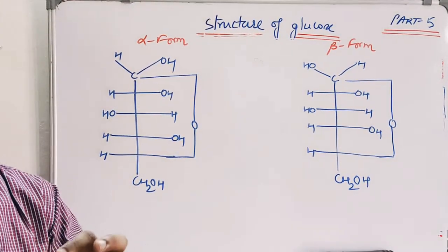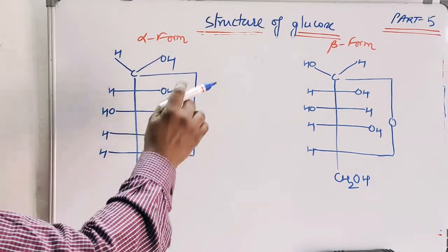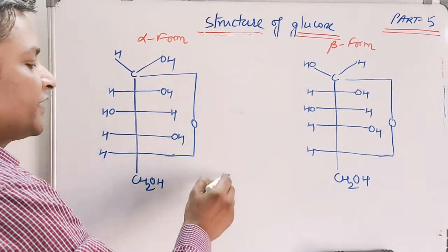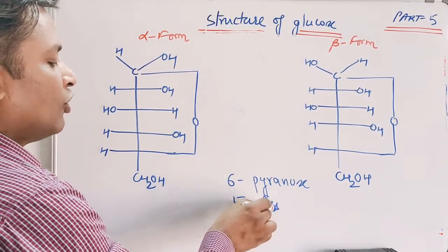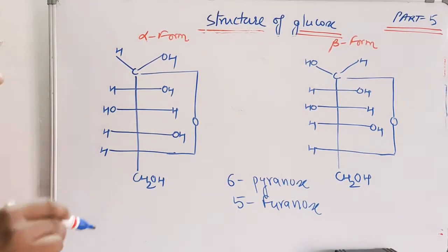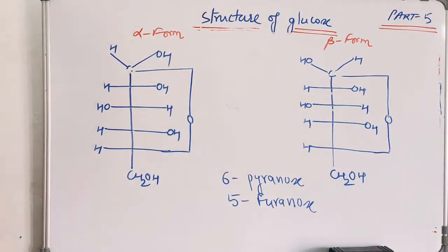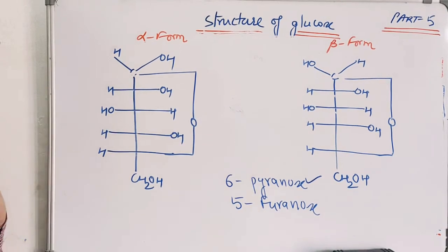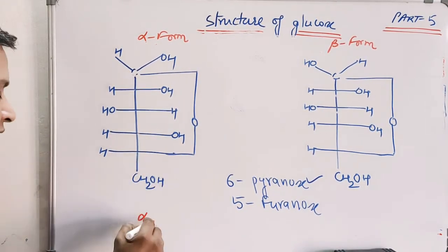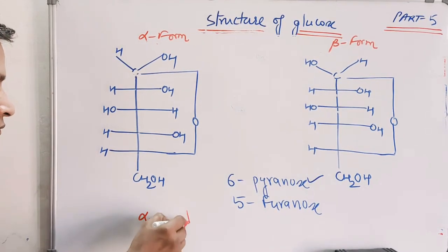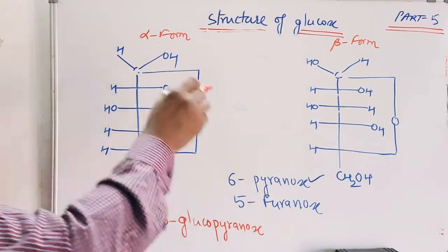The cyclic structure of glucose existing in two forms — alpha and beta — is commonly asked in exams. You may be asked to write the glucose structure in alpha or beta form and name the compound. It is a six-membered ring, so it is a pyranose form. The name of the alpha form is alpha-D-glucopyranose, and the beta form is called beta-D-glucopyranose.